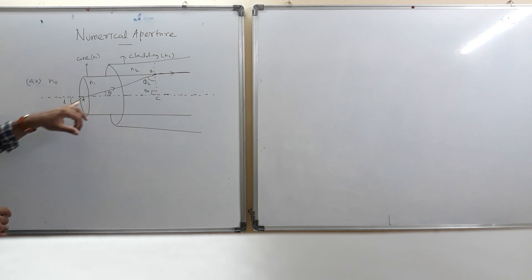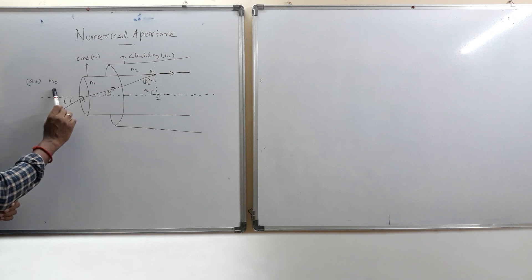Here, when OA is incident, it makes an angle i and the light is refracted inside because the light is arriving from the rarer medium into denser medium. So, whenever the light is coming from the rarer into denser, it bends towards the normal.